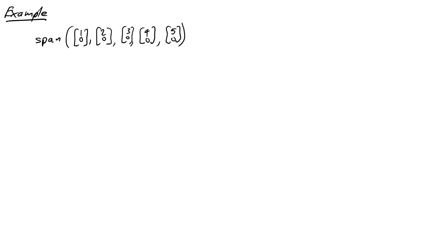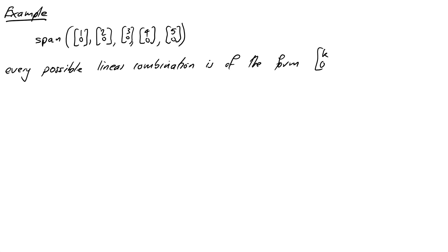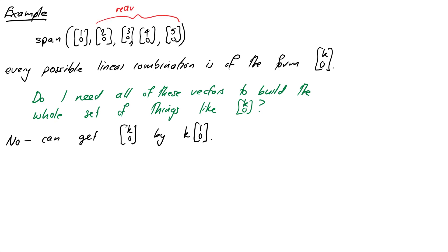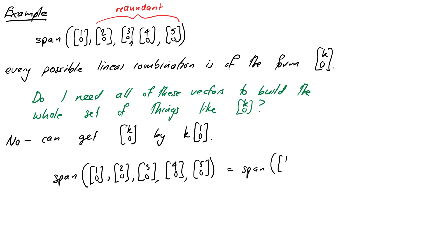Let's have a look at the span of a particular set of vectors as an example. We'll look at the span of the set of vectors (1,0), (2,0), (3,0), (4,0), and (5,0). We're asking ourselves: what vectors can we build by taking linear combinations of these? Every possible linear combination is going to result in something of the form (k, 0). Now, do we actually need all of these vectors to build everything in the span — i.e. everything that looks like (k, 0)? Well, actually no — we can get anything like that by just computing k times (1, 0). So we could write that the span of all five vectors is equal to just the span of the vector (1, 0) by itself.